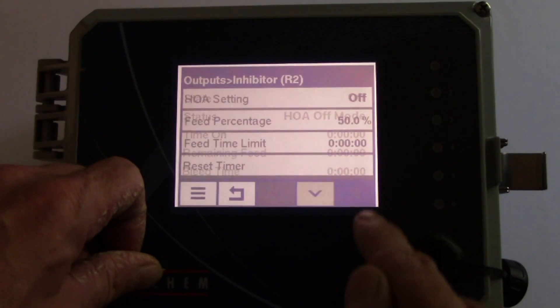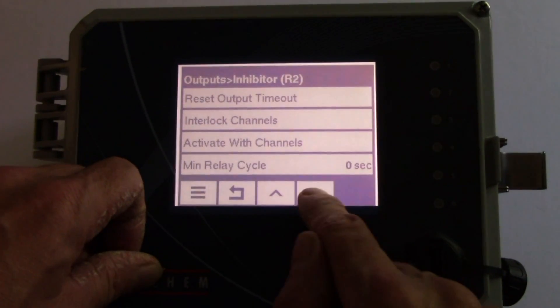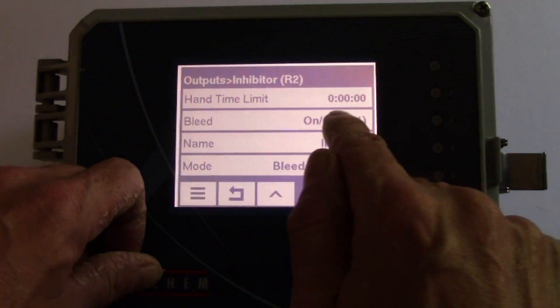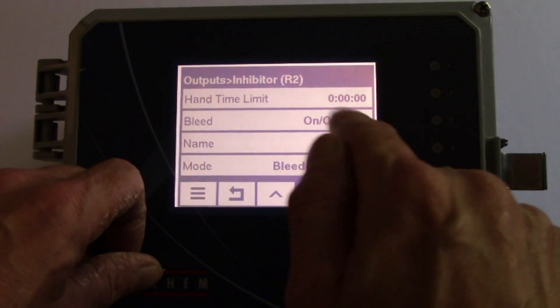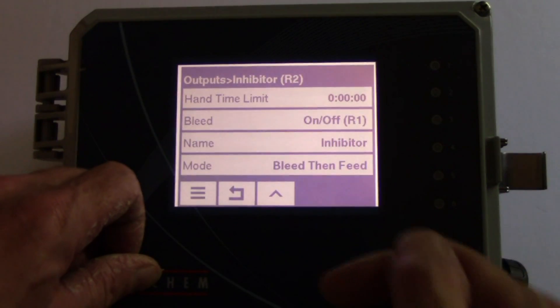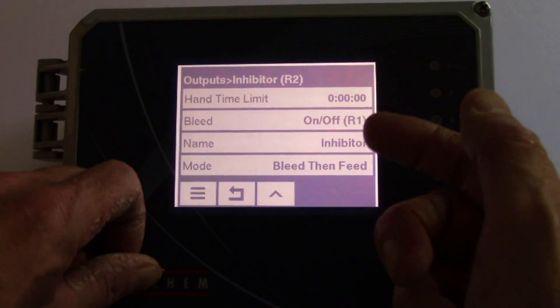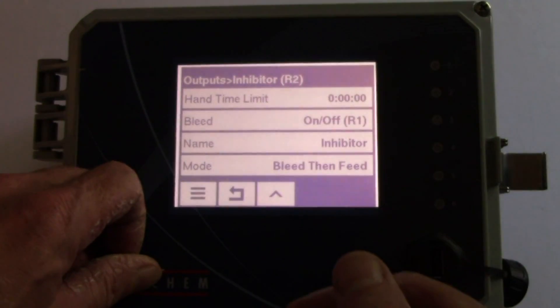Then the settings again, and I'm going to make sure that the bleed is the relay we just programmed for the bleed valve. So now the bleed valve will come on. When it turns off, the inhibitor feed pump will come on.